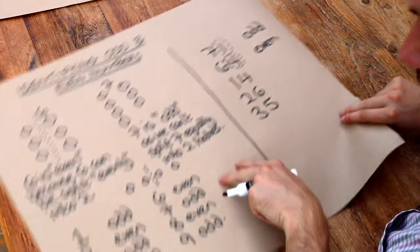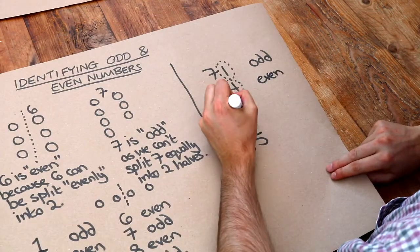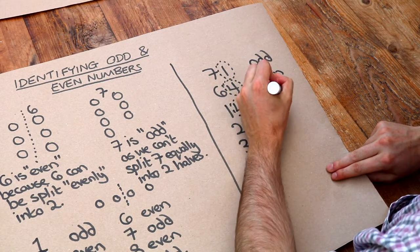What about 14? Well the last digit is again 4. And we already know 4 is even. So 14 is even.